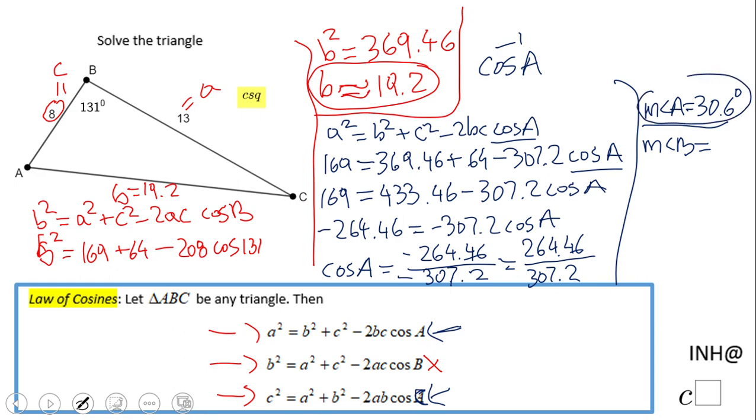Now we have angle A and angle B, which is given as 131 degrees. How do we find C? We're going to add these two, 131 and 30.6, and subtract from 180. The measure of angle C is 180 minus the sum of these two, which is 161.6, so angle C is 18.4 degrees.